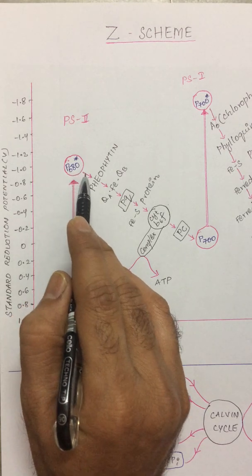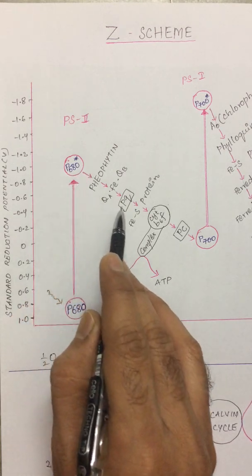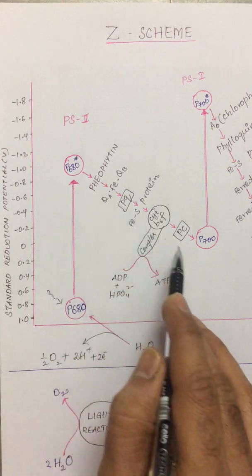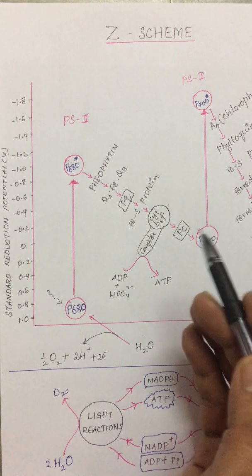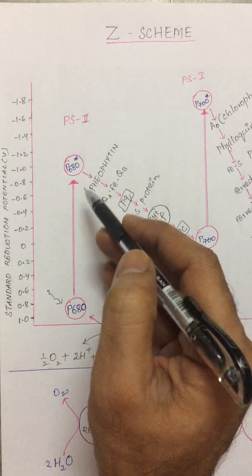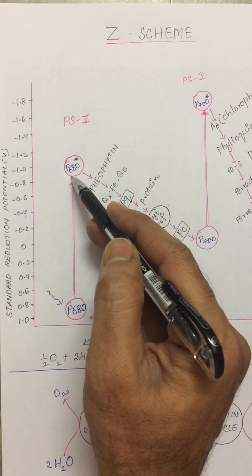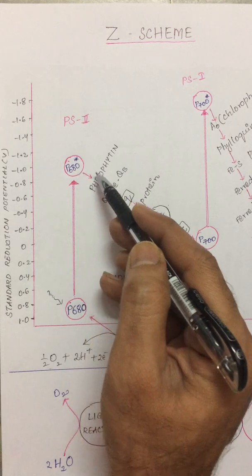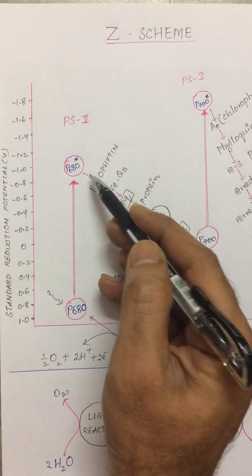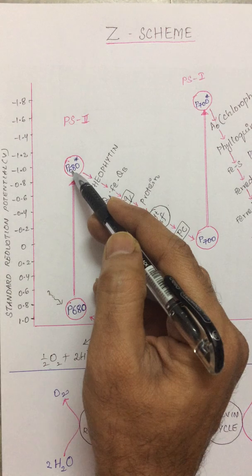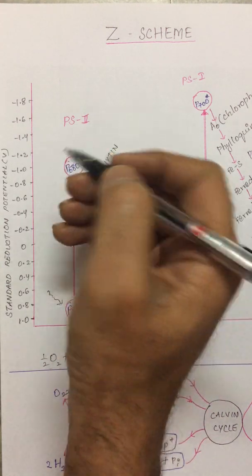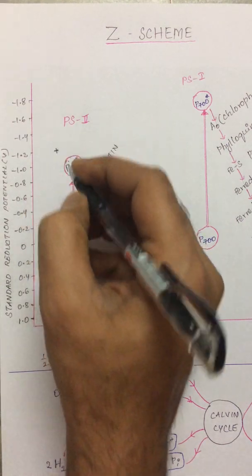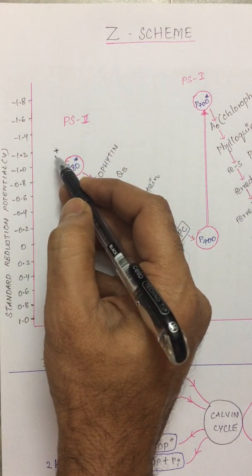Once such an exciton is taken up by P680, it gets excited. This excited P680 system will lose an electron, which is taken up by several electron carriers and slowly passed on to Photosystem 1, the P700 system. The excited P680 acts as a very strong reducing agent, giving away its electron. Once it has done so, the excited P680 is converted into a cationic form.